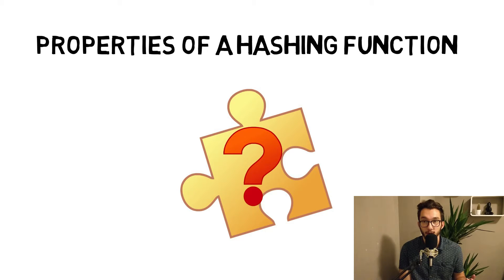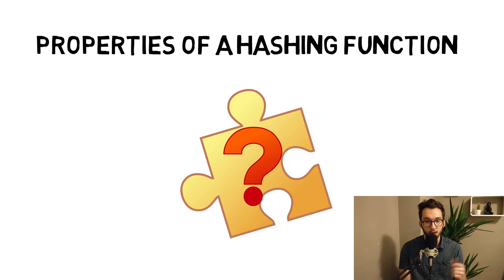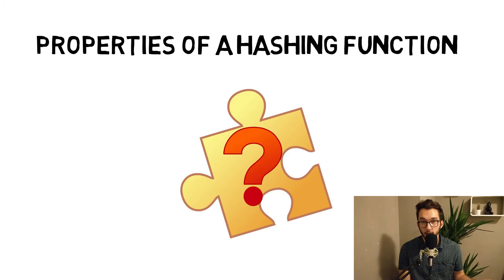It must allow quick computation — it has to be fast, because if it's really slow it will slow down the entire blockchain. It also needs pre-image resistance, meaning it only goes one way: you cannot go back from the output to the input. And small changes must change the hash totally — that's important.